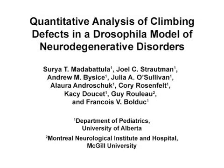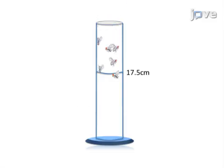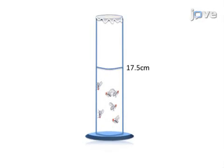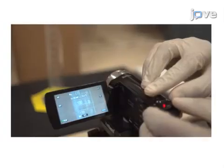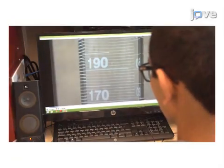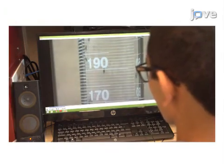The overall goal of this procedure is to quantify the climbing ability of wild-type flies and flies mutant for genes involved in locomotion. This is accomplished by first transferring the flies into a glass-graduated cylinder. The second step is to displace the flies to the bottom of the cylinder by lightly tapping the cylinder on foam padding. Next, flies crossing the target line are recorded using a video camera for a duration of 2 minutes. The final step is to analyze the videos and plot the number of flies above the target line every 10 seconds.